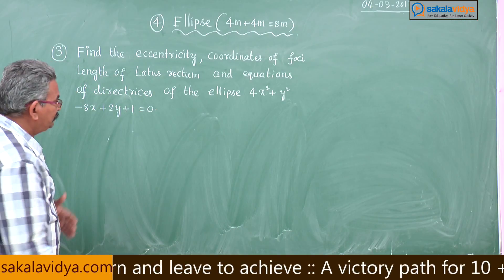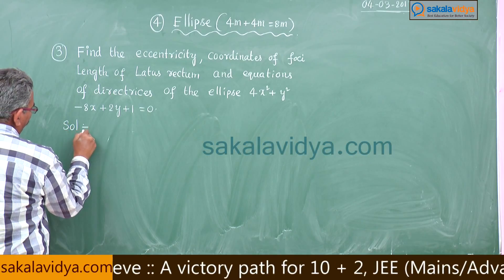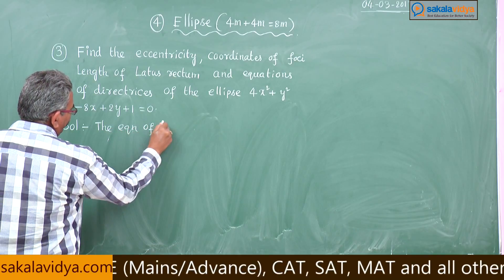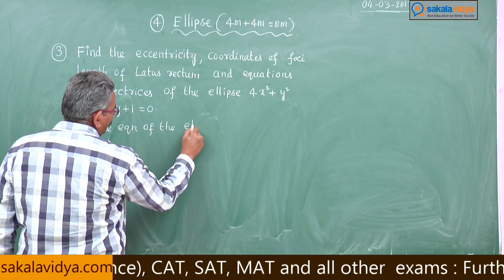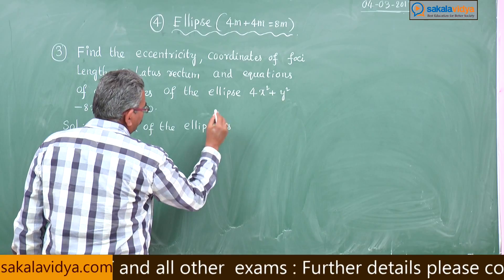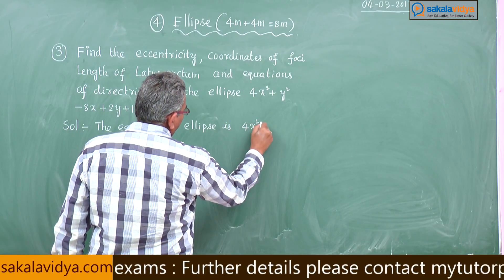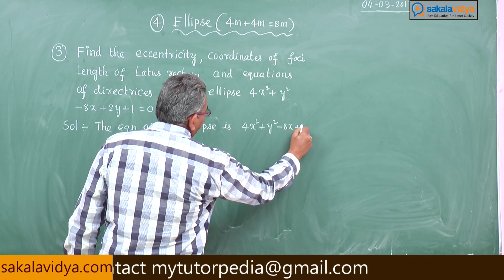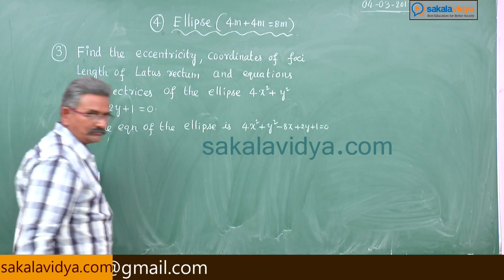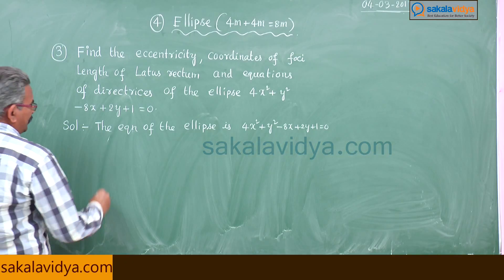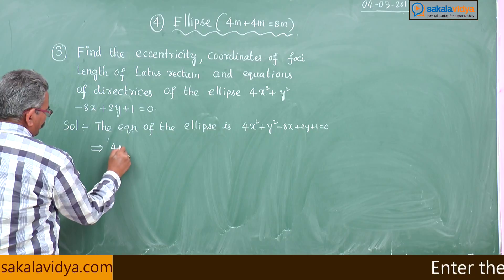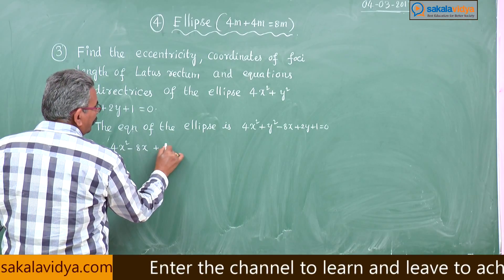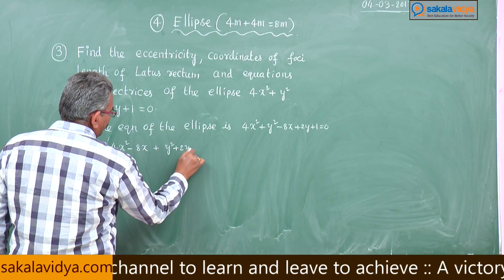Now let us start the problem. The equation of the ellipse is 4x² + y² - 8x + 2y + 1 = 0. This can be rewritten as 4x² - 8x + y² + 2y + 1 = 0.